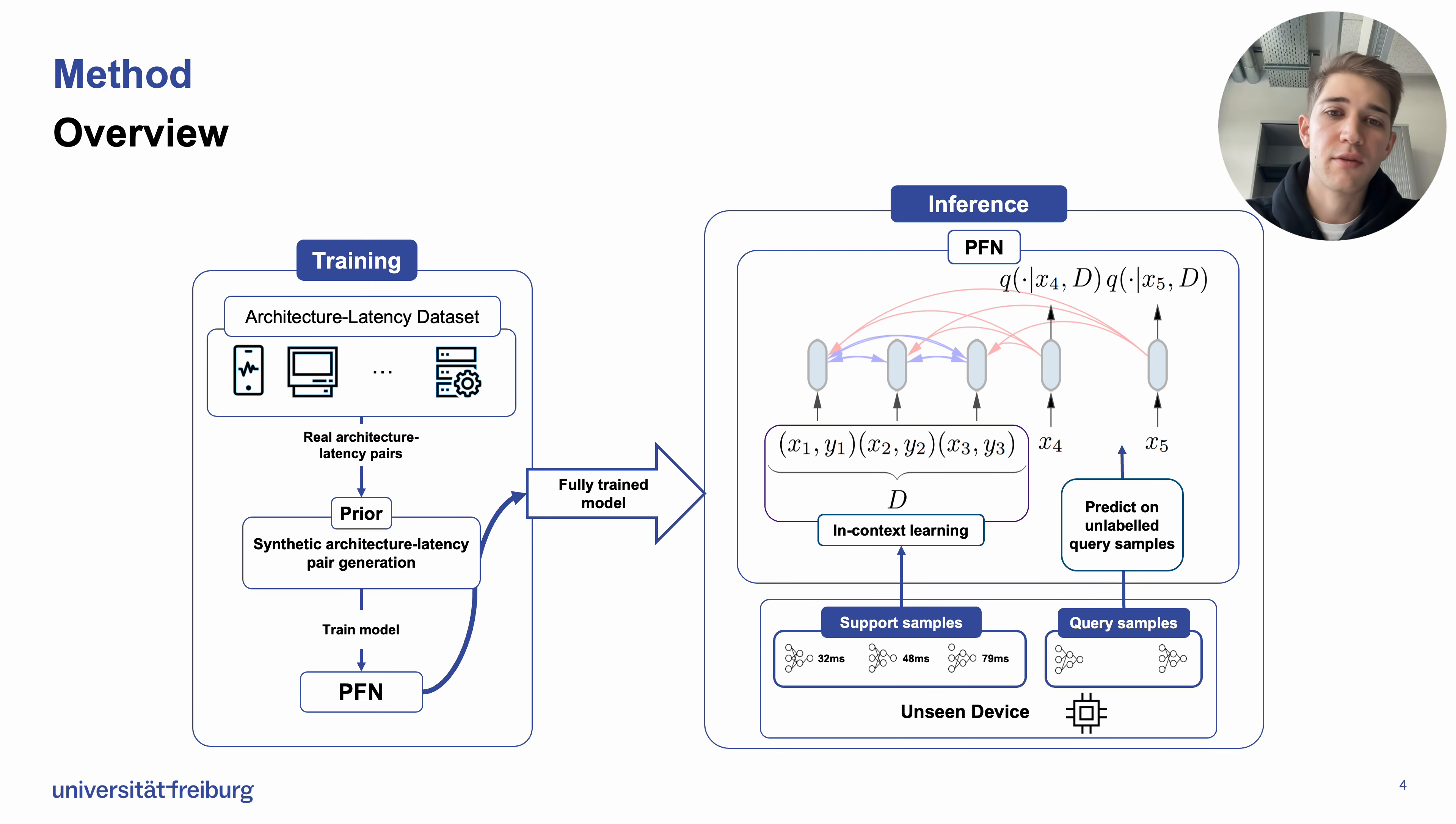After we've trained and want to perform inference, we might have an unseen hardware device. From this unseen hardware device, we collect a set of support samples—architectures and their respective latencies on that device. We pass these together with a set of query architectures to our model, which performs in-context learning on the support samples to get good predictions for these query architectures. That is our quick overview of training and inference.